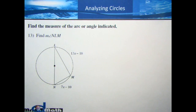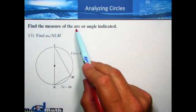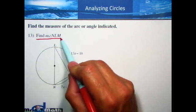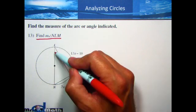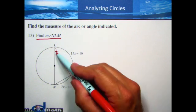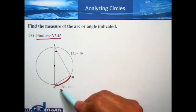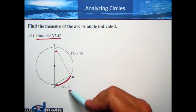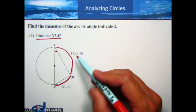As we continue with our exploration of inscribed angles and circles, one of the things we'll notice is to always pay attention to make sure you're reading what the question is asking. It says find the measure of the arc or the angle indicated. In this case, it's asking for angle NLM. We don't have any information about the angle except that the arc from N to M is 7X minus 10, and there's another arc that is 13X minus 10.